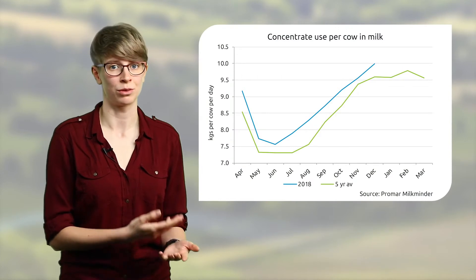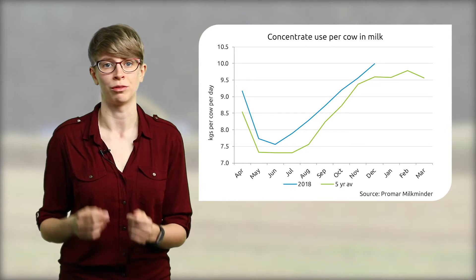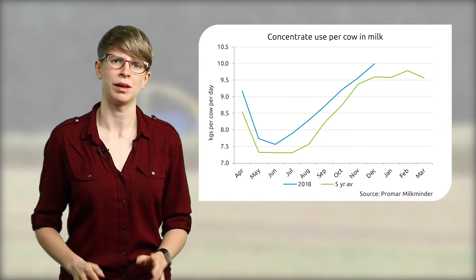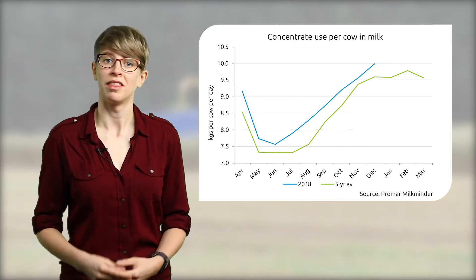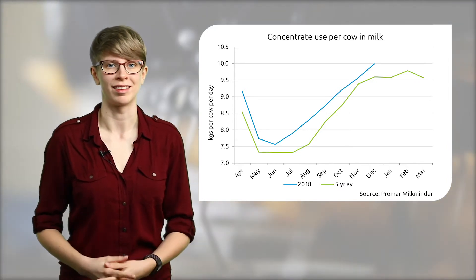During the summer months of 2018 yields were supported by farmers needing to use a higher proportion of bought-in feed to supplement low forage levels. This higher level of concentrated feed per cow can be seen in Promar Milkminder data.